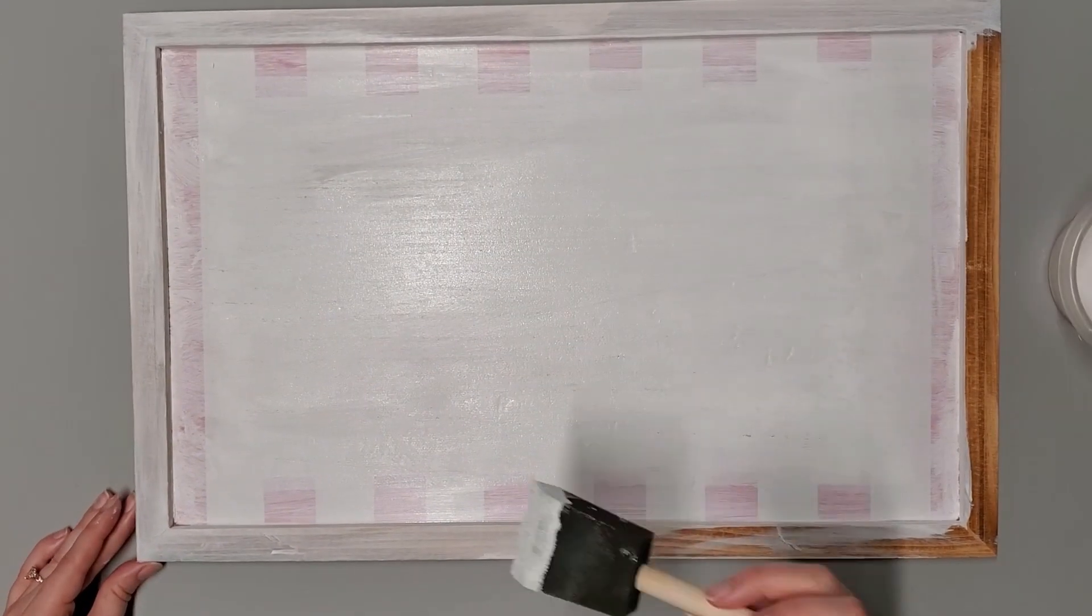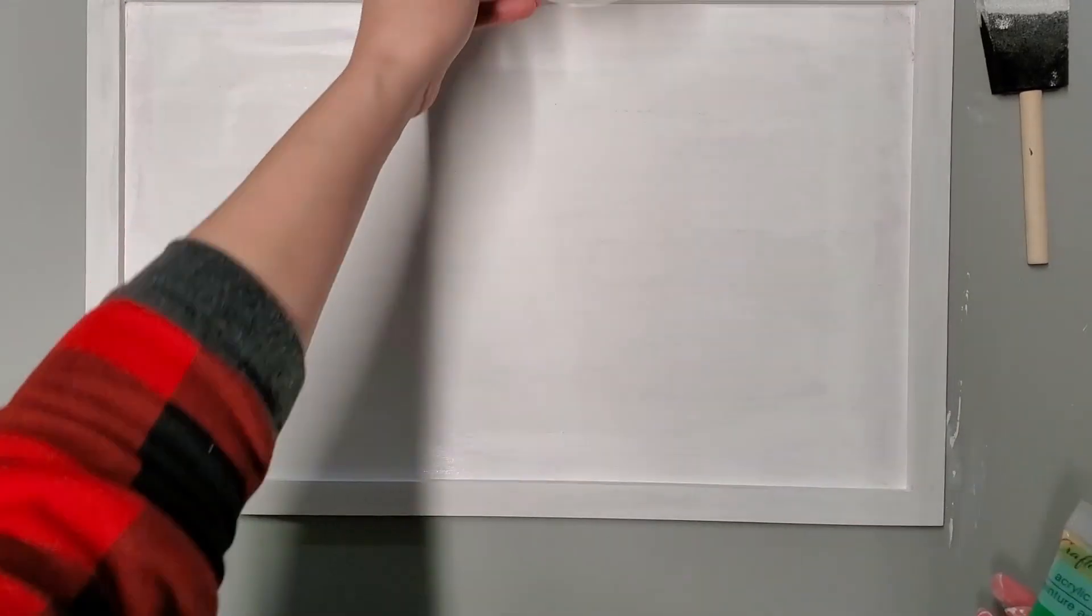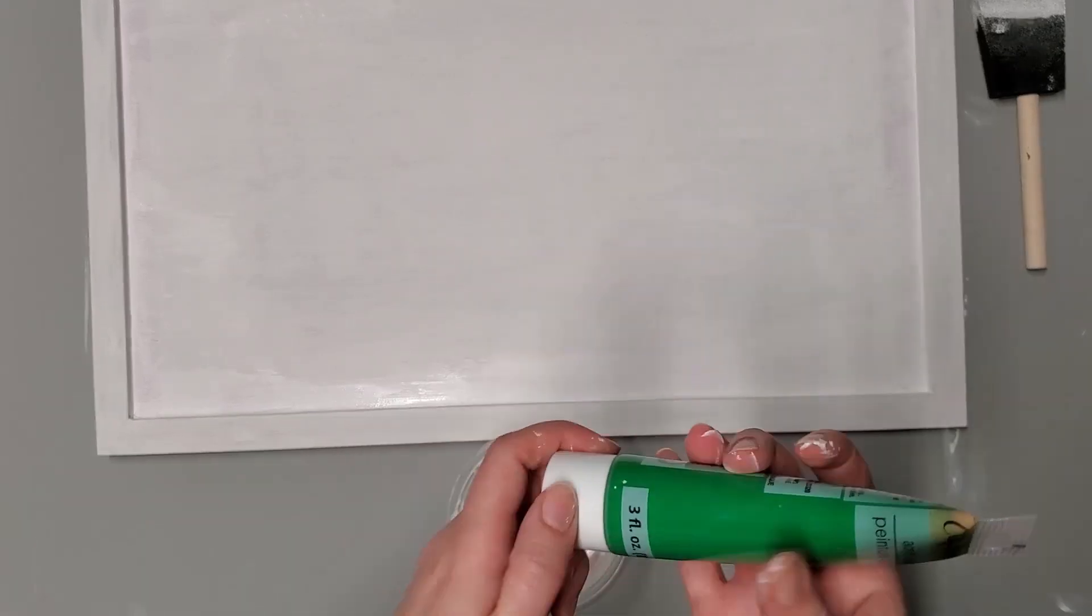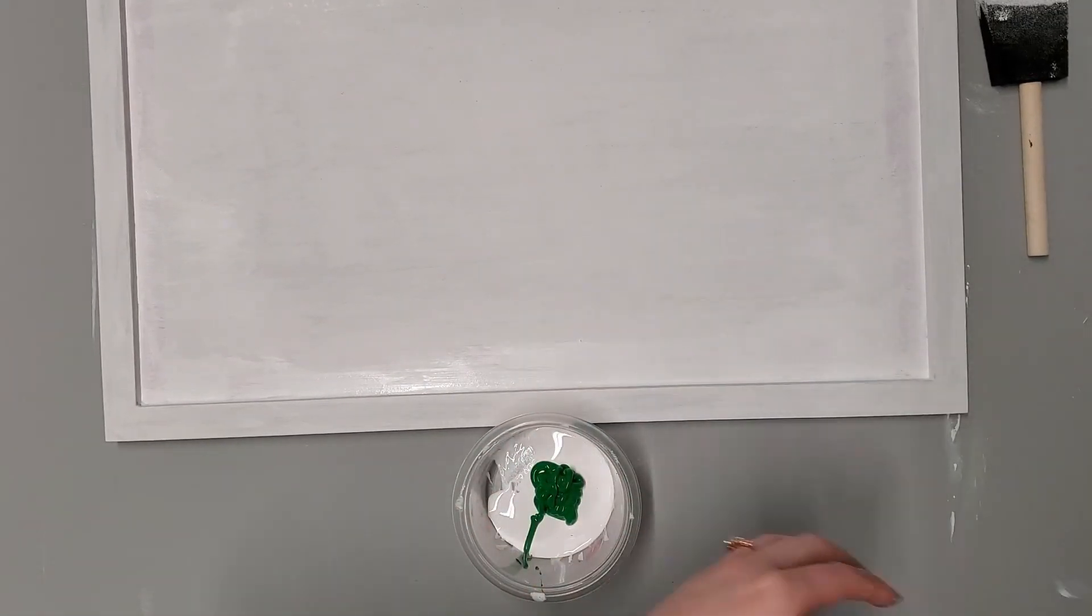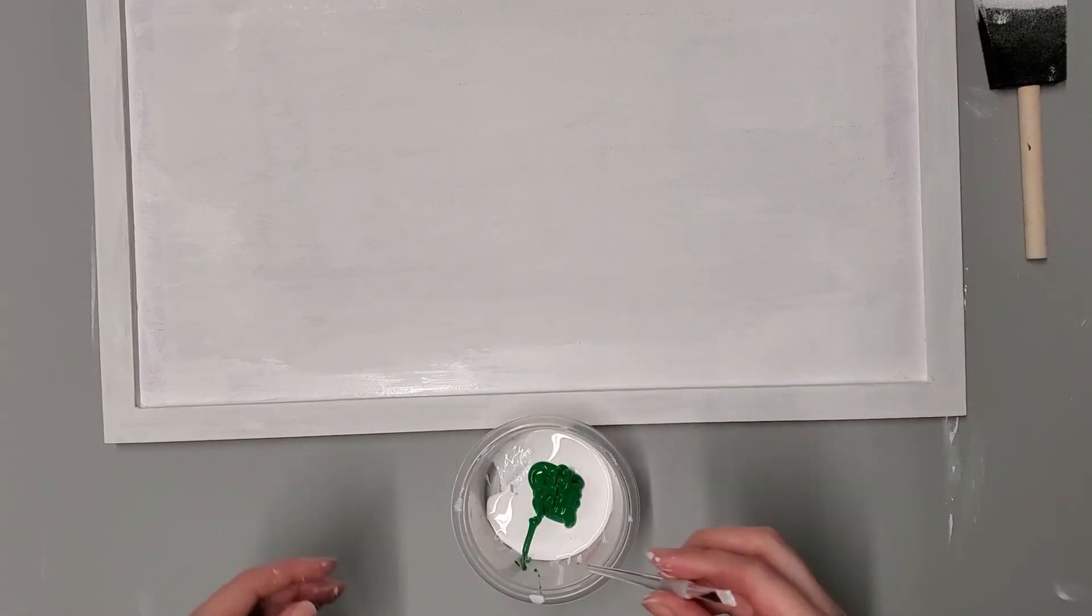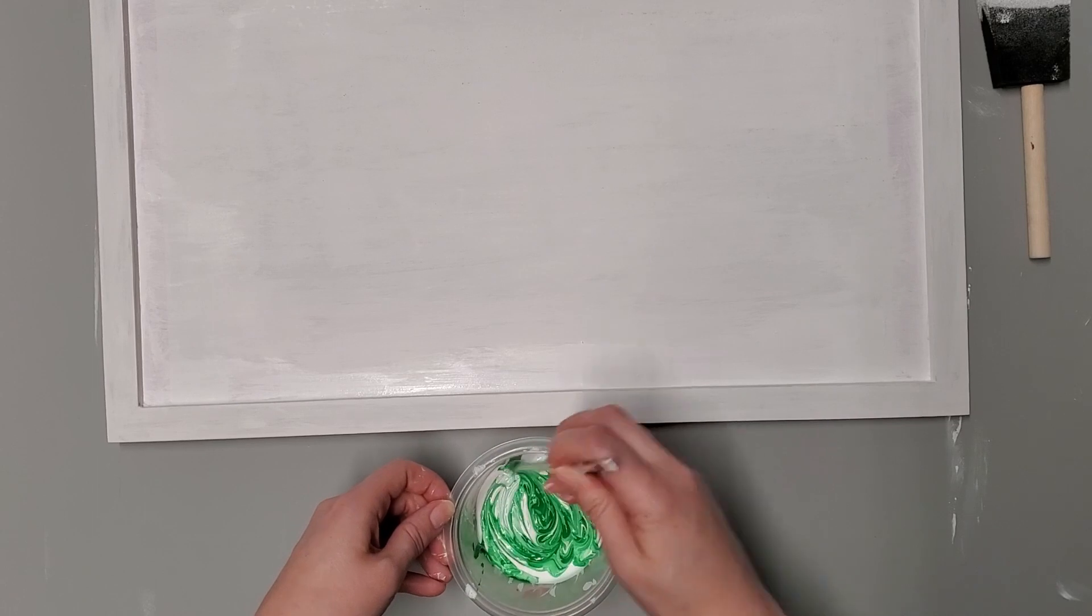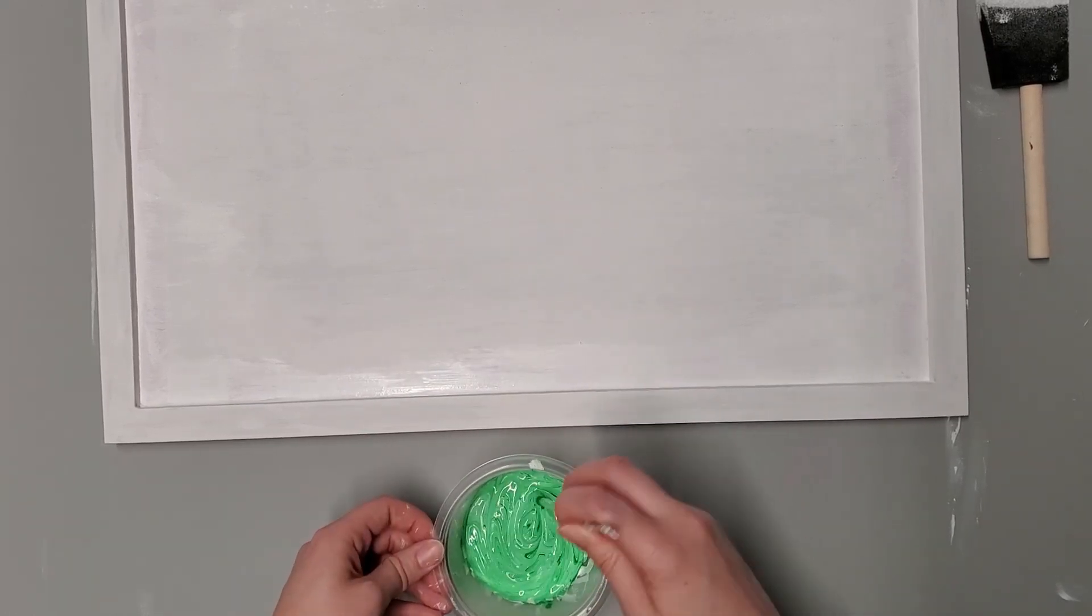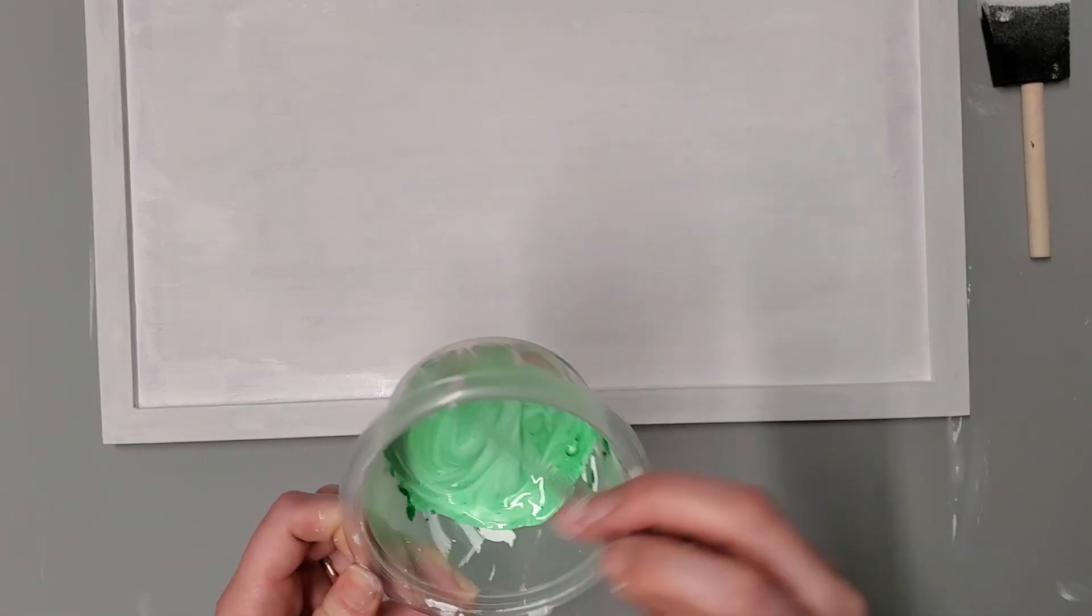I'm painting the whole thing, the back, sides, everything with the white Adirondack. Then I'm coming back in with my green. I'm using a mix of the white Adirondack and then this green acrylic paint that I got from the Dollar Tree.